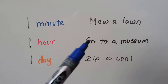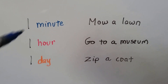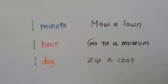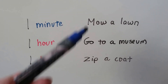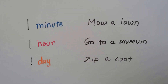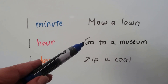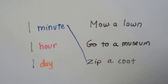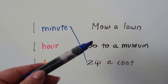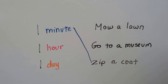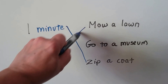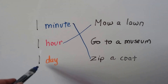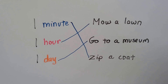Let's try it again. Now we've got one minute, one hour, and one day, with activities: mow a lawn, go to a museum, or zip a coat. Which one takes about a minute — the time to count to sixty? We wouldn't mow a lawn in that time, and we wouldn't go to a museum for only one minute, so it would be zip a coat. What about one hour? It would take about an hour to mow a lawn. You wouldn't want to go to a museum for only one hour — there's a lot to see, so that would take a whole day.